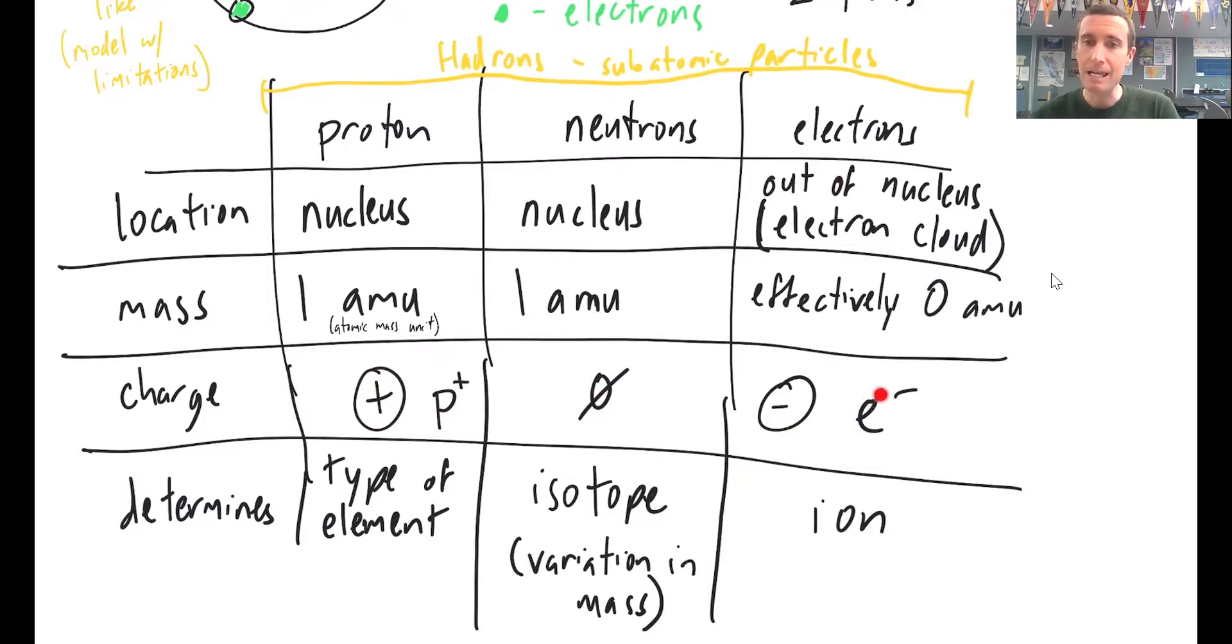And electrons have a negative charge. So that would be like an E with a negative sign on it. So the protons and the electrons would balance each other out charge wise. The neutrons would kind of like be neutral.